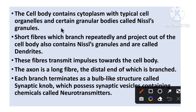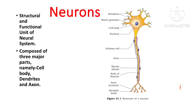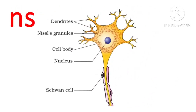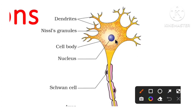In the cell body, there is a cytoplasm present. Along with the cytoplasm, typical cell organelles like the nucleus are present. There are also some granular bodies present which we know as Nissl granules. Looking at the structure of the cell body, we can see the nucleus and the Nissl granules present within it.